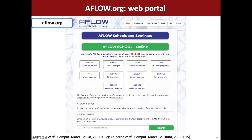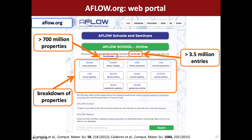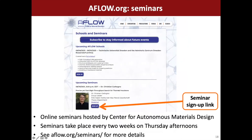Here's the aflow.org homepage. We now have over three and a half million entries and over 700 million calculated properties. You can see a breakdown of properties — including how many band structures, binary systems, ternary systems, and so on. Also note the AFLOW schools and seminar page, where you can find more information about workshops like this one and the AFLOW seminar series, which runs every second week, usually on Thursday afternoons at 3 p.m. Eastern time. The next one is in two days with Dr. Christian Carbonio from the Fritz Haber Institute in Berlin.